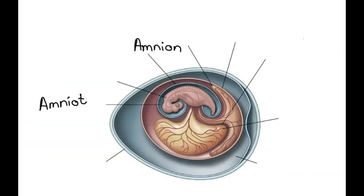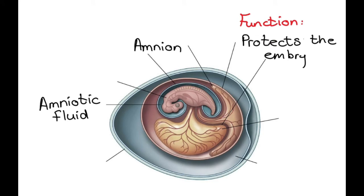Then we have the amnion, which is a membrane, and inside the amnion we will have the amniotic fluid. This is the reason why we call it an amniotic egg, because of this amniotic sac, and the function of the amnion and its amniotic fluid is about protecting the embryo as well.